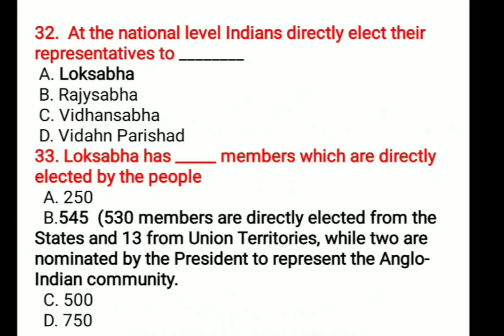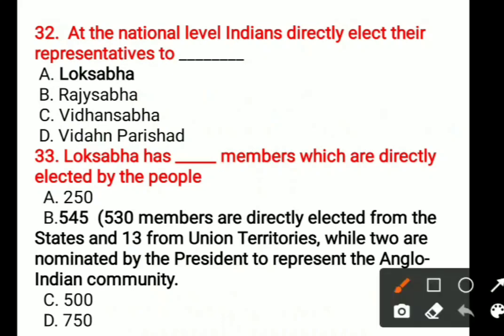We've already discussed up to question number 31. Now we are going to discuss question number 32. At the national level, Indians directly elect their representative to blank. Options are: A. Lok Sabha, B. Rajya Sabha, C. Vidhan Sabha, D. Vidhan Parishad. The correct answer is Lok Sabha.